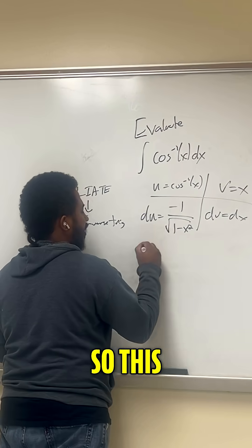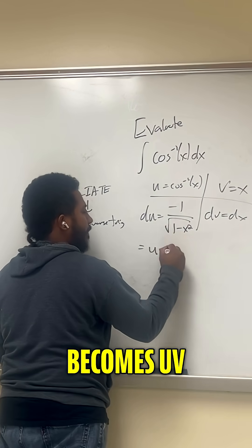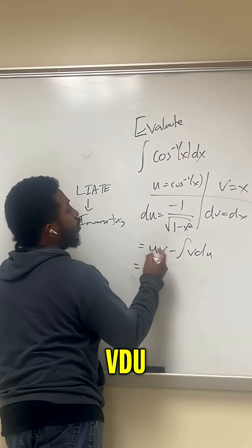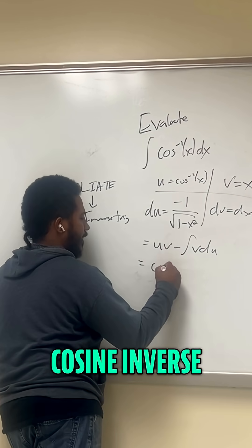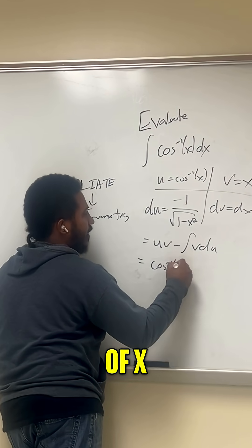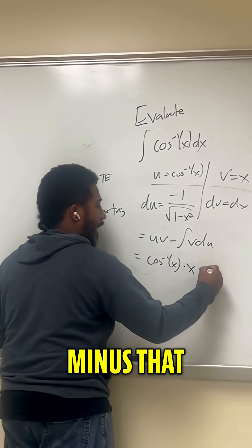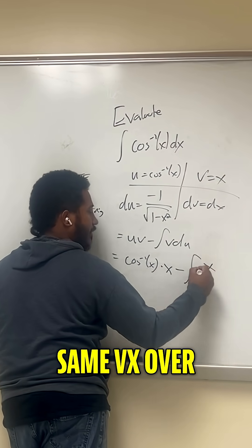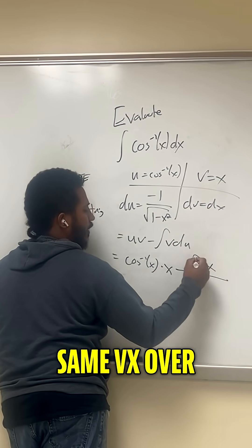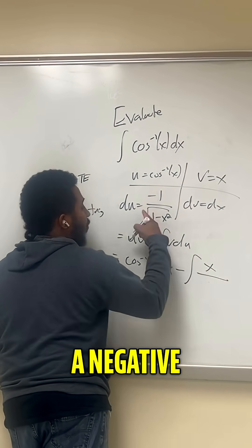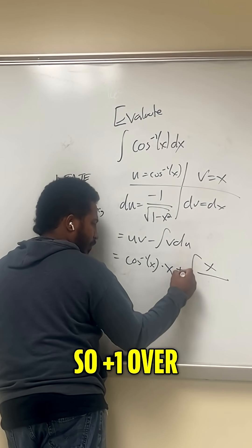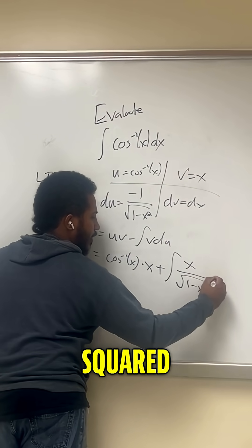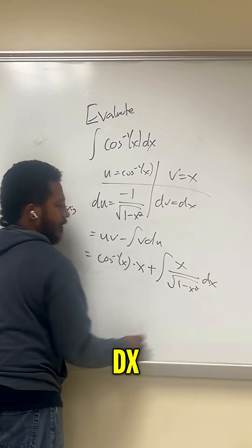Then we use our ultraviolet voodoo. This becomes uv minus the integral of v du. u being cosine inverse of x, v being x, minus that same v, x, times negative 1 over the square root of 1 minus x squared, so plus 1 over the square root of 1 minus x squared, dx.